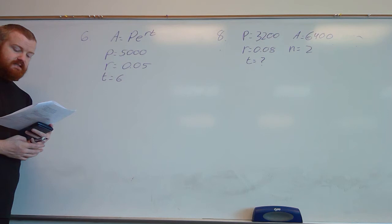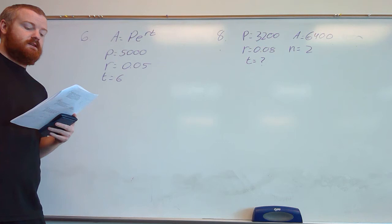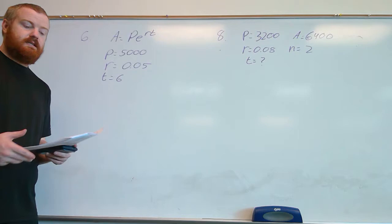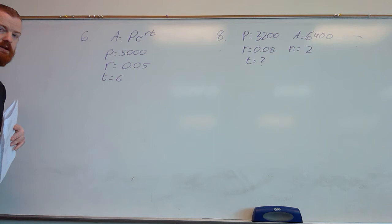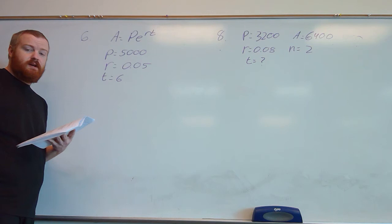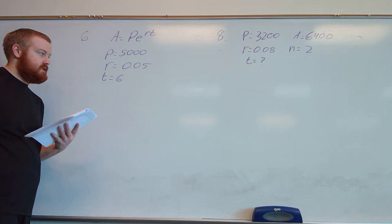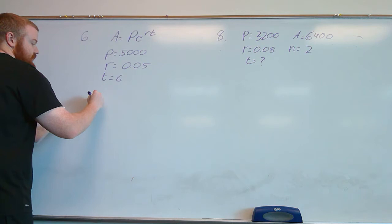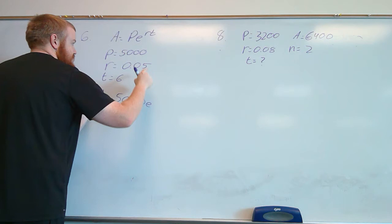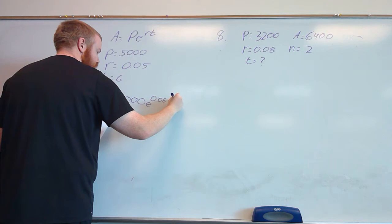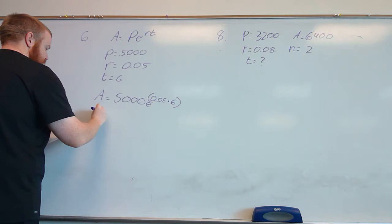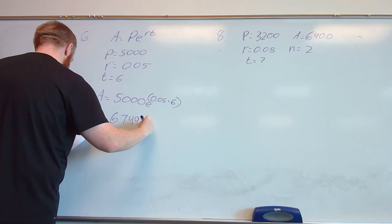For example 6, $5,000 is invested for 6 years at 5% compounded continuously. Since it says continuously, we use the formula A equals P times e to the RT. P is 5,000, R is 0.05, and T is 6. So A equals 5,000 times e to the power of 0.05 times 6. Plugging this into the calculator gives us $6,749.29.